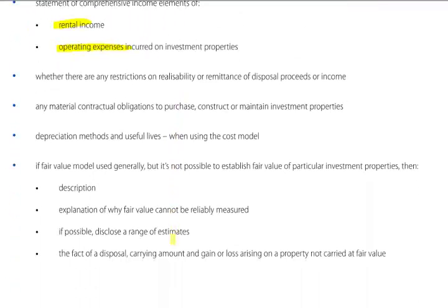Disclose whether there are any restrictions on realisability or remittance of disposal proceeds or income. Any material contractual obligations to purchase, construct or maintain investment properties should be disclosed, as should depreciation methods and useful lives when using the cost model. If the fair value model is used but fair value cannot be established, provide a description and explanation of why, and if possible disclose a range of estimates, along with the carrying amount and gain or loss on any disposal not carried at fair value.